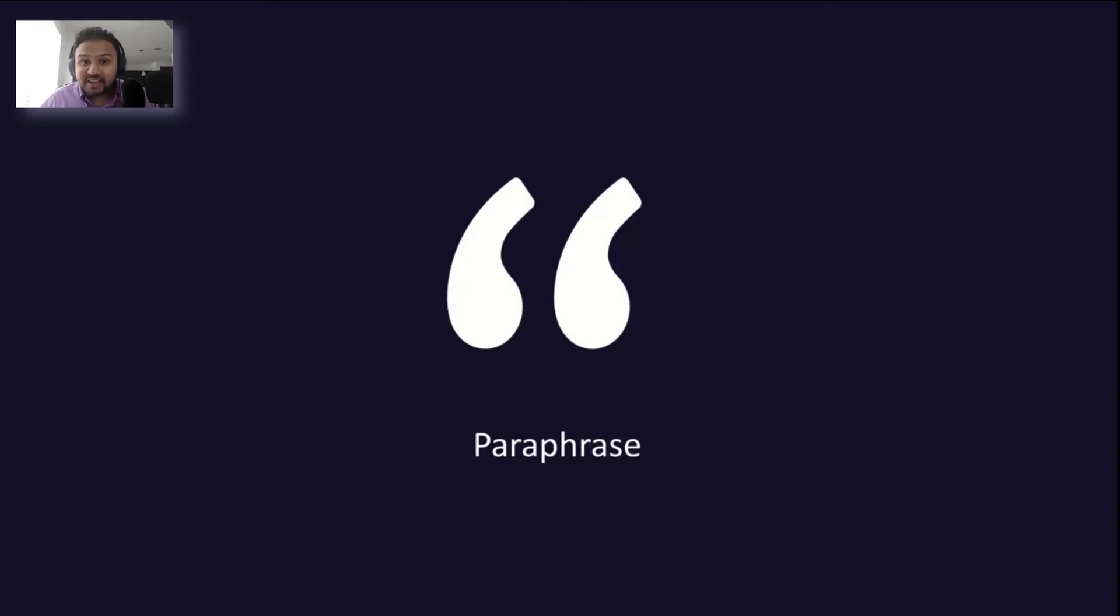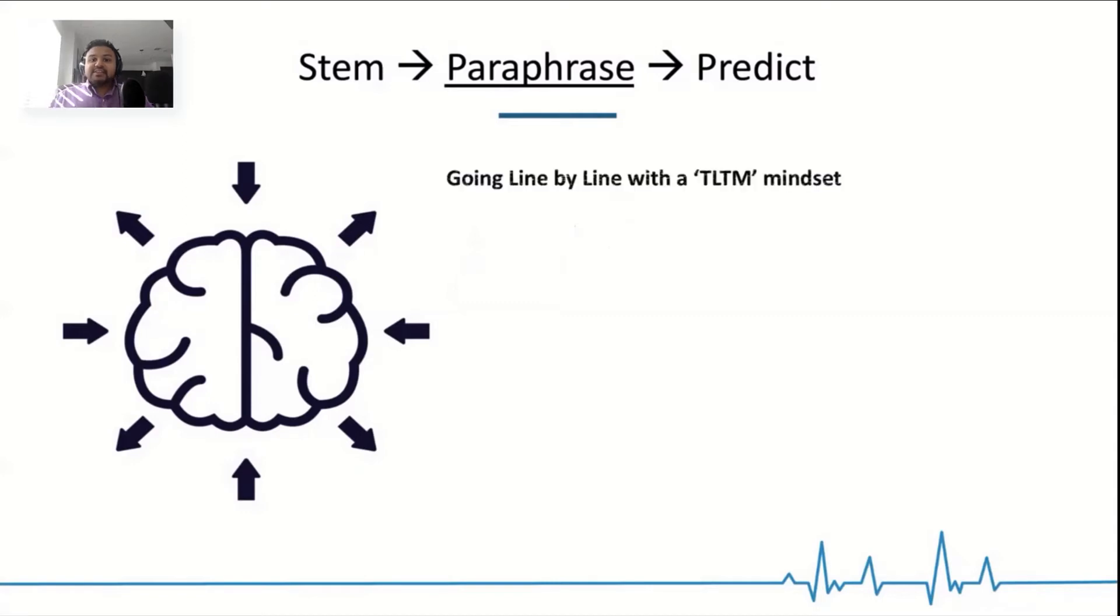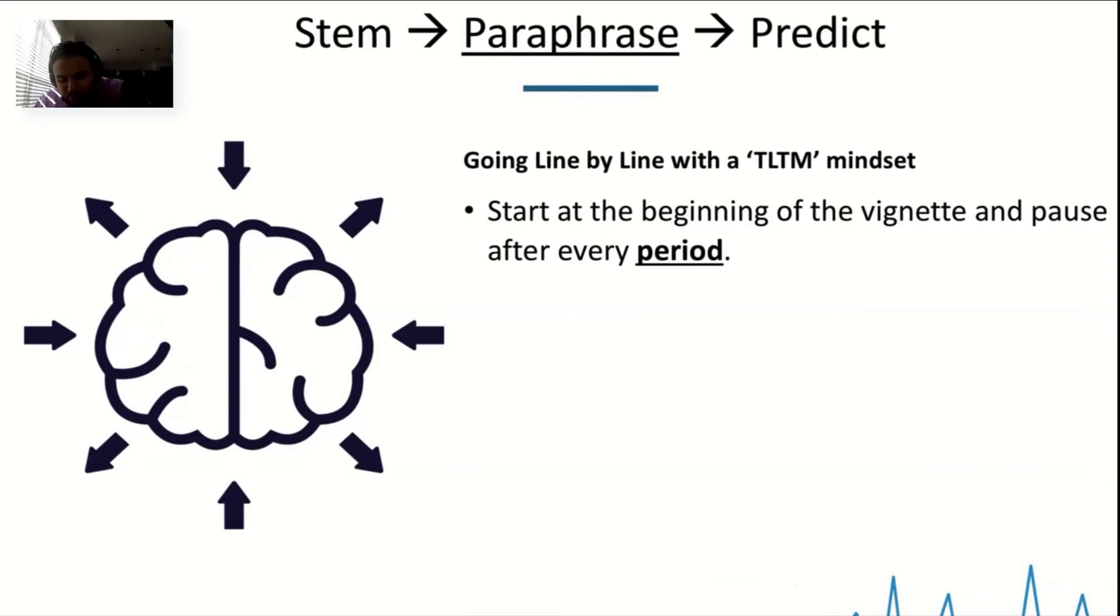Paraphrasing is going line by line, starting at the top of the vignette. You've read the question. Now you start at the top and you go line by line. And after every period, you pause. After every period, you pause.